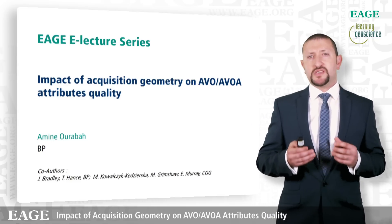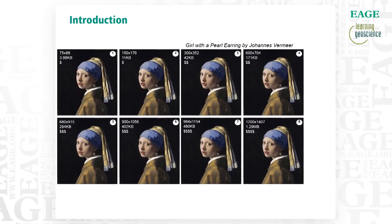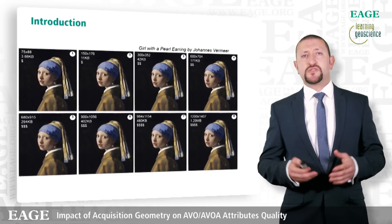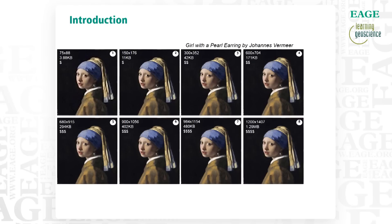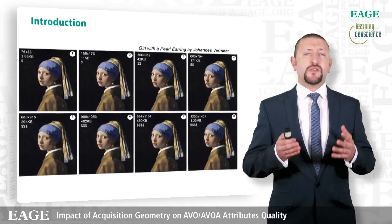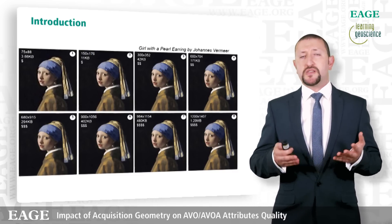Before I start this presentation, I would like to use a simple analogy to explain the motivation behind this work. On the screen you see eight different scans of a famous painting called the Girl with a Pearl Earring, going from the lowest resolution on the top left corner, number one, to the highest resolution, number eight, on the bottom right corner. Those eight pictures have been tagged with their resolution and size, and for different reasons you can assume that high resolution pictures are always more expensive than lower resolution ones. So the question now is, given those eight different pictures, which one would you choose? Well, the answer is very simple — it depends what you want to do with it.